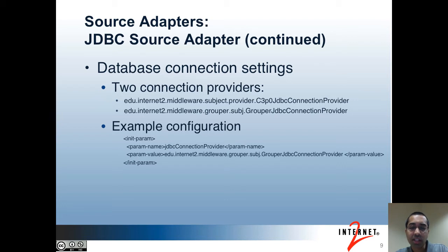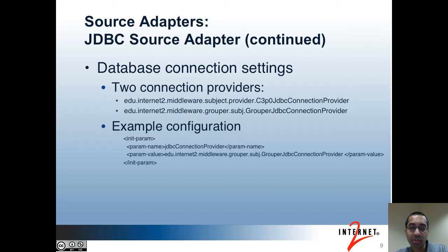If you use the second connection provider, the Grouper JDBC connection provider, the connection settings come from the grouper.hibernate.properties file. You can use this option if the source is located on the same database as your Grouper registry. The benefit here is to avoid duplication of connection settings and reuse pooled connections, which reduces the number of open connections to your database.